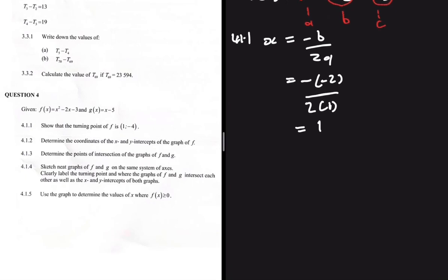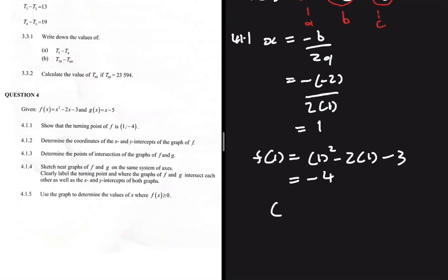Now to find the y value, we substitute x equals 1 into f of x. We get f(1) equals 1 squared minus 2 multiplied by 1 minus 3. So 1 minus 2 minus 3 equals minus 4. We have showed that the turning point is at x equals 1 and y equals minus 4.